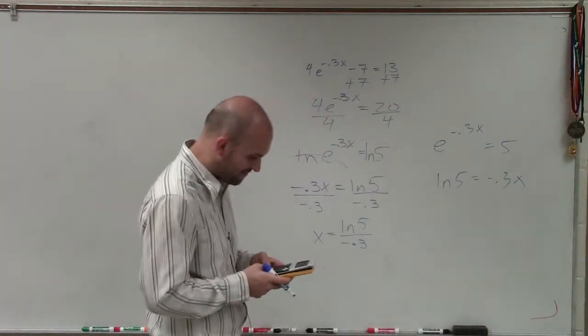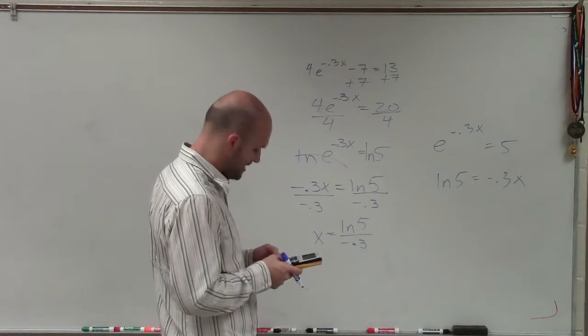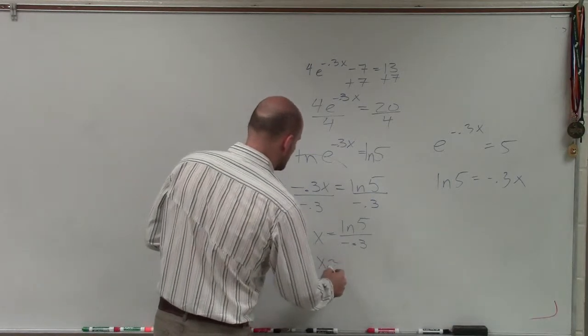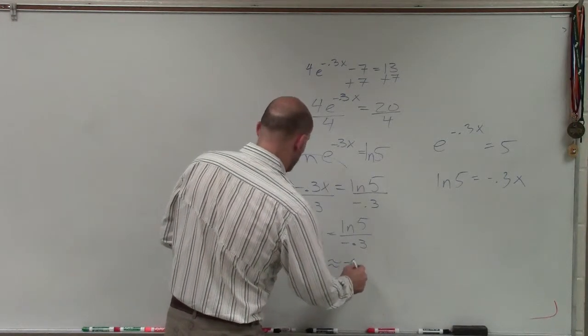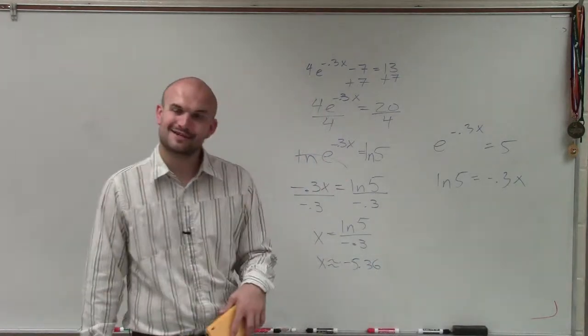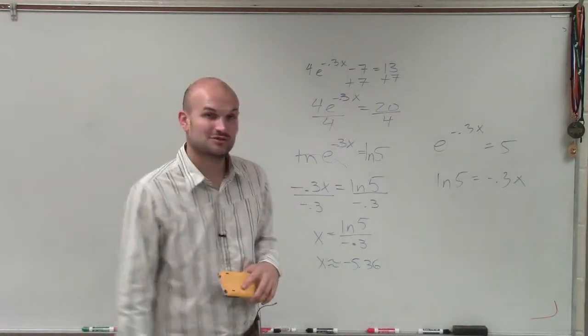So now I do ln of 5, and then I divide that by negative 0.3. And what I get, ladies and gentlemen, is x equals approximately negative 5.36. So there you go, ladies and gentlemen. That is how you solve your exponential equation. Thanks.